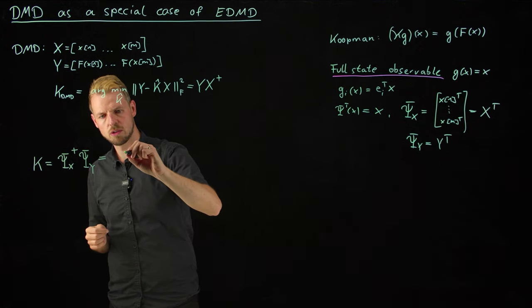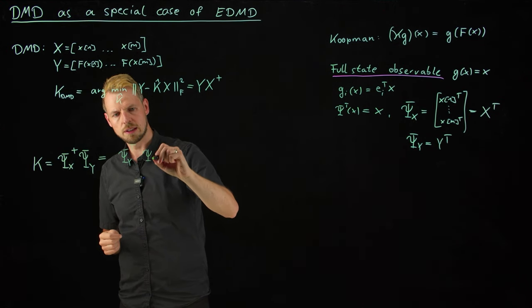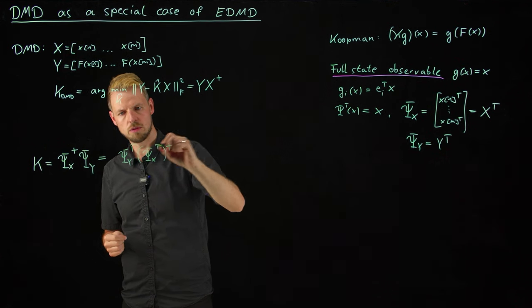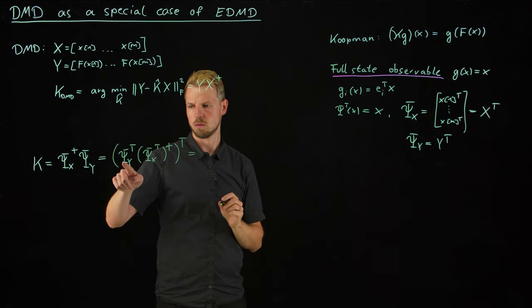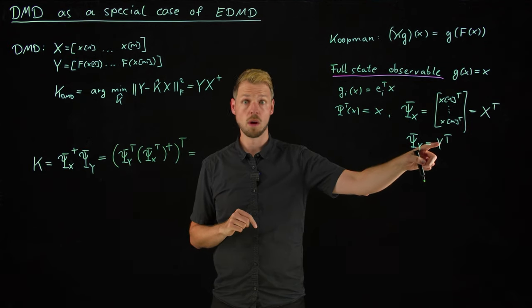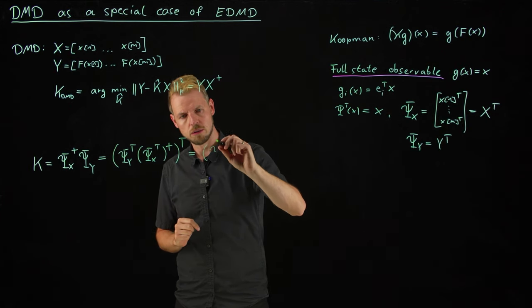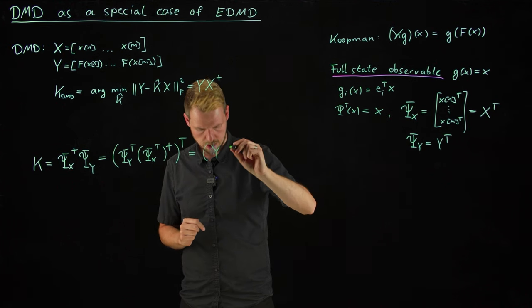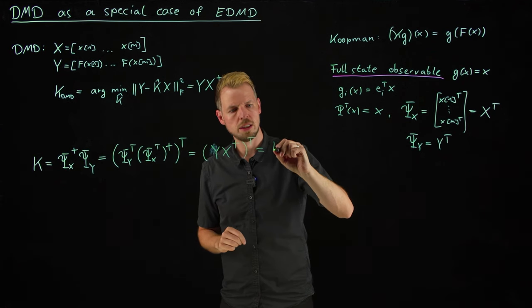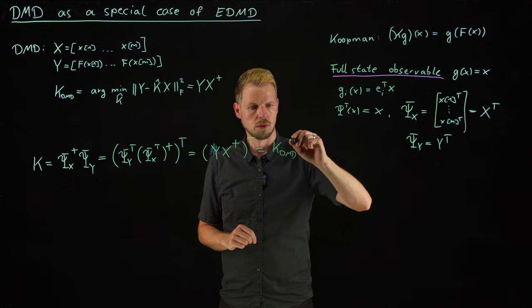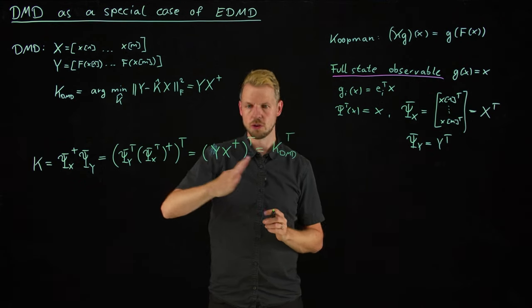But before I do so, I do a little trick with the transposed, transposing of the matrices. So I'm swapping the order and putting the transposed on them, psi_x transposed pseudo inverse transposed, which then gives me, this is my psi_y transposed is exactly my y matrix. And my psi_x transposed is exactly my x matrix. So what I get is y x pseudo inverse transposed, which is, if we look at this here, the DMD matrix transposed.